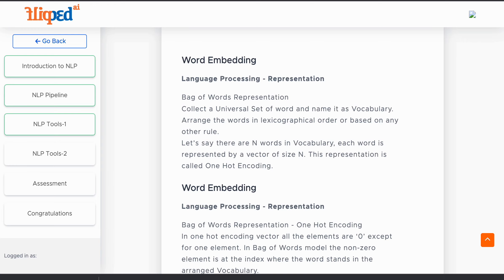There is a term called bag of words representation, where text from data will be collected and will be named as vocabulary or dictionary. After collecting the vocabularies, those words will be arranged in lexicographical order.